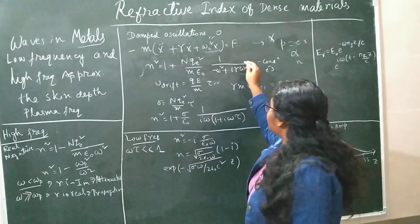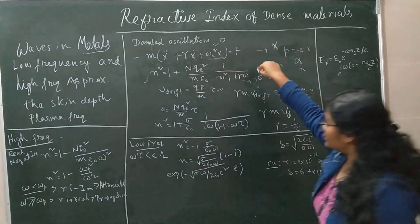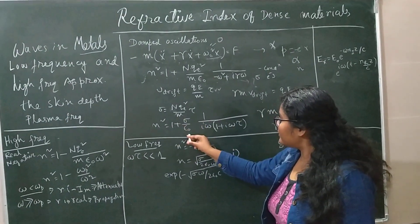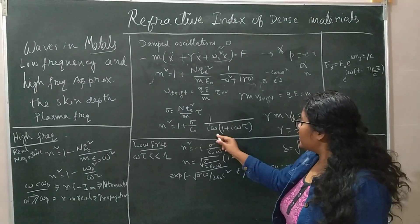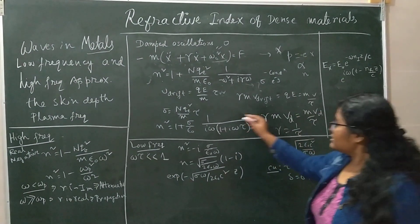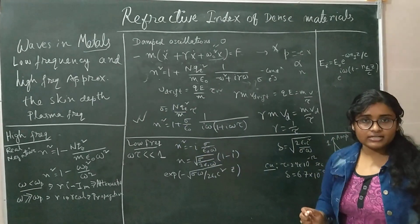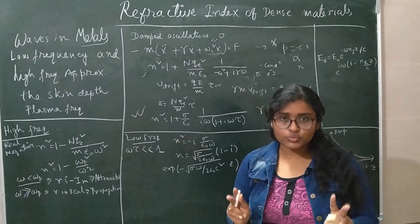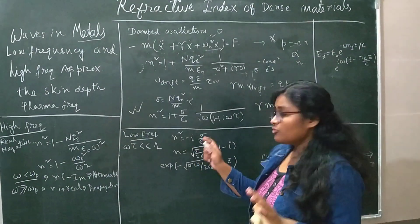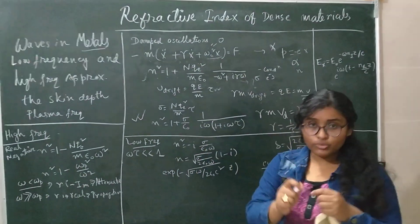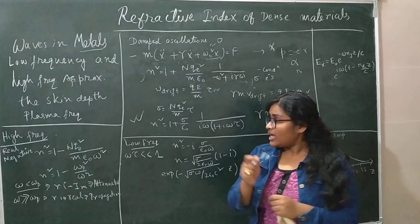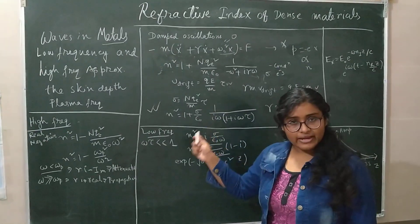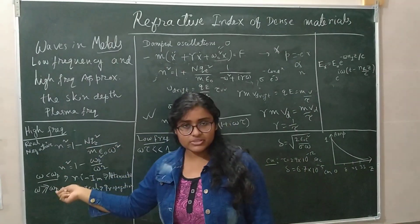Writing the equation in terms of τ, we get n² = 1 + (σ/ε₀) × [1 / (iω(1 + iωτ))]. This is the general refractive index relation for the metal case. I will now consider two cases: the low frequency case, where the applied electric field varies at low frequency, and the high frequency case.